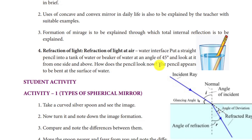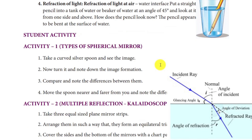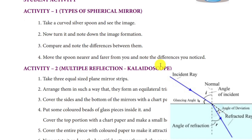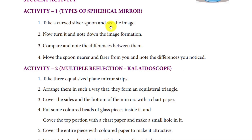Coming to the student activity, the first one: take a curved silver spoon and see the image. Now turn it and note down the image formed. Compare and note the differences. If you look at the outer side you can see one type of image, and if you look at the inner side you can see a different image.